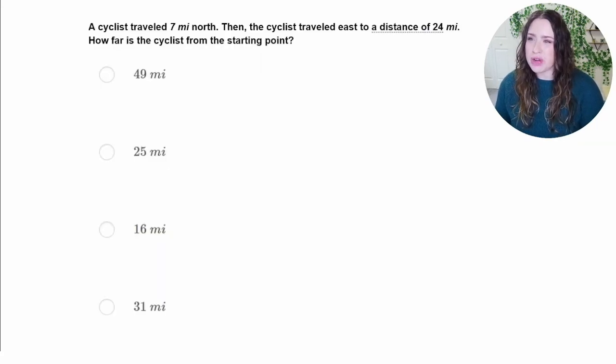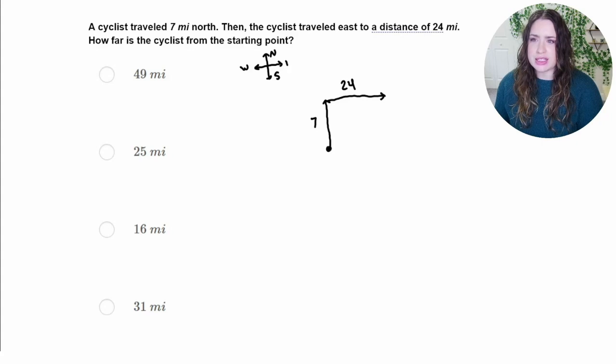Let's take a look at this question. A cyclist traveled 7 miles north, then the cyclist traveled east to a distance of 24 miles. How far is the cyclist from the starting point? So let's think about a map here. So if a cyclist starts here and travels 7 miles north and then travels east 24 miles. Now if you can't remember your directions, of course we have north and south. And then the way that I always remember this is west to east because it spells WE. But I think there's also like a common saying like never eat soggy waffles that may or may not ring a bell as well.